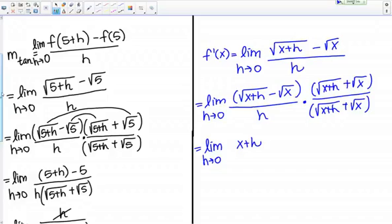My outer terms give me plus root x times root x plus h, but my inner terms give me minus root x times root x plus h. Those things go away. Then my last terms give me minus square root of x times square root of x, so that's minus x. Then in the denominator I have h times the quantity square root of x plus h plus square root of x.